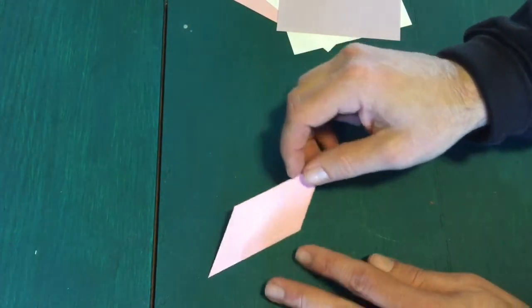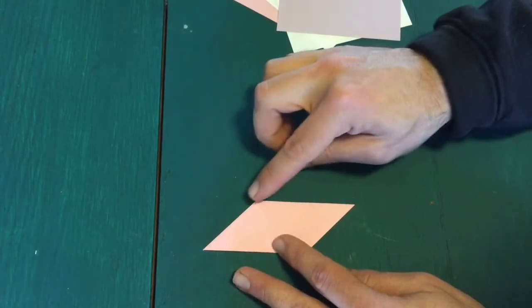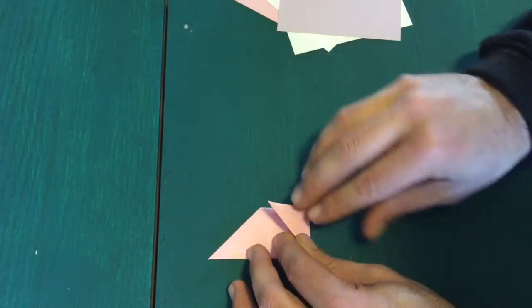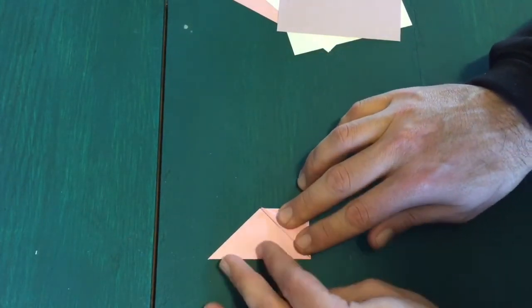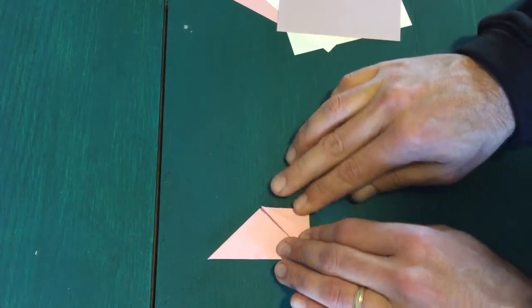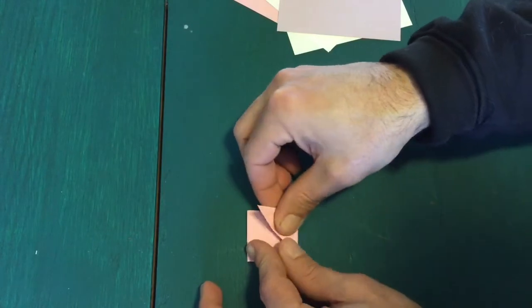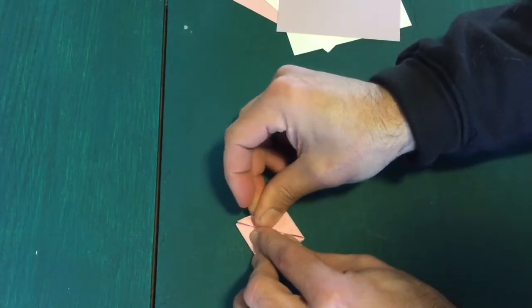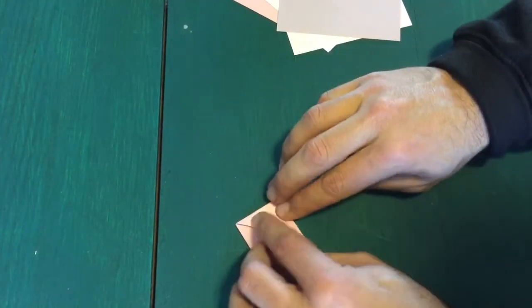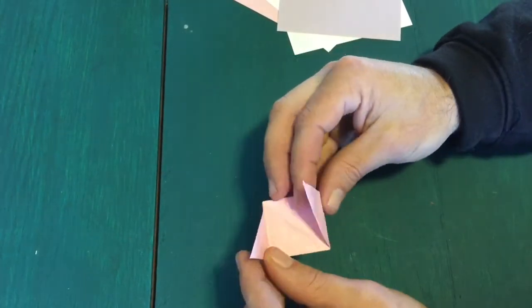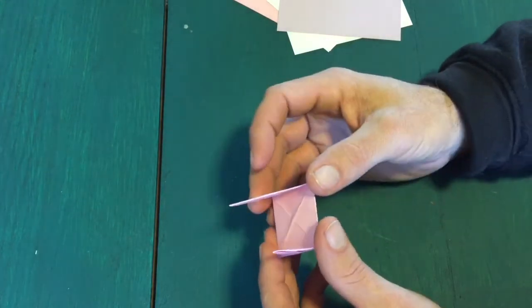Now flip the parallelogram over and form a square by taking the sharper angle to the more obtuse angle. Once you've done this to both sides, you're going to have the basic building block, not just for the cube that I'm going to show you in this video, but for an icosahedron that I'll show you in another video in a couple of days.